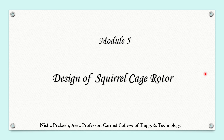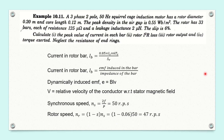Here we are going to solve one more problem on the design of squirrel cage rotor. A 3-phase, 2-pole, 50 Hz squirrel cage induction motor has a rotor diameter of 0.20 meter and core length 0.12 meter. The peak flux density in the air gap is 0.55 Weber per meter square. The rotor has 33 bars, each of resistance 125 micro ohm and a leakage inductance of 2 micro henry. The slip is 6%. Calculate the peak value of current in each bar, the rotor copper loss, rotor output, and torque exerted. Neglect the resistance of end rings.